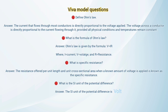Viva questions: What is Ohm's law? The electric current flowing through a conductor is directly proportional to the potential difference across its ends, provided the physical conditions remain constant. What is the formula of Ohm's law? V = IR, where I is current, V is voltage, and R is resistance.